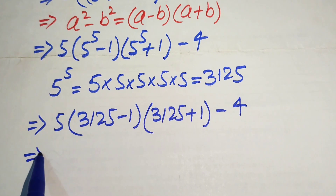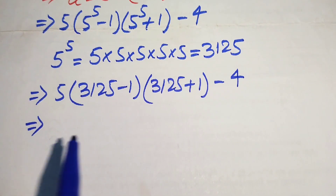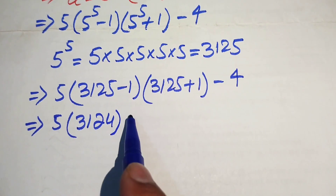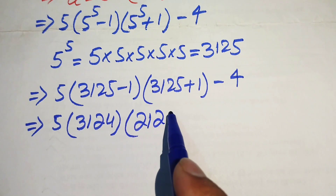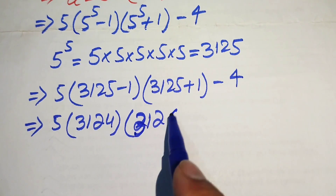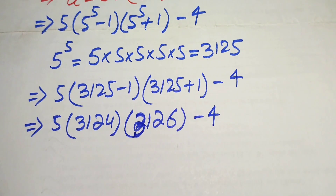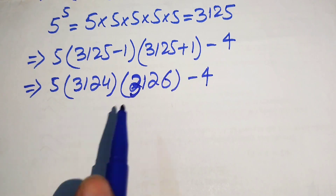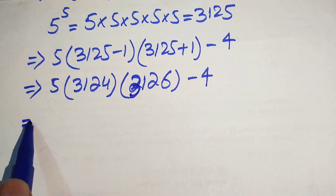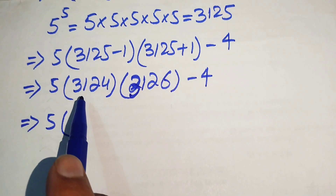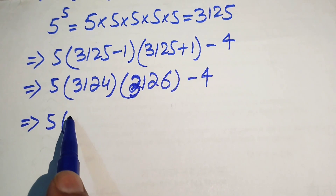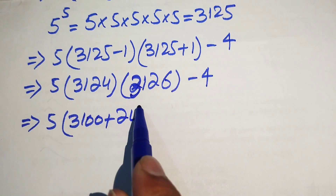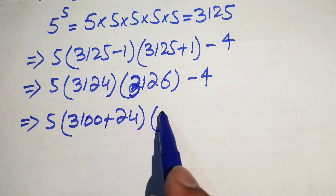Subtracting and adding, we get 5 into 3124 times 3126, minus 4. We then break these numbers: 3124 is written as 3100 plus 24, and 3126 is written as 3100 plus 26, minus 4.